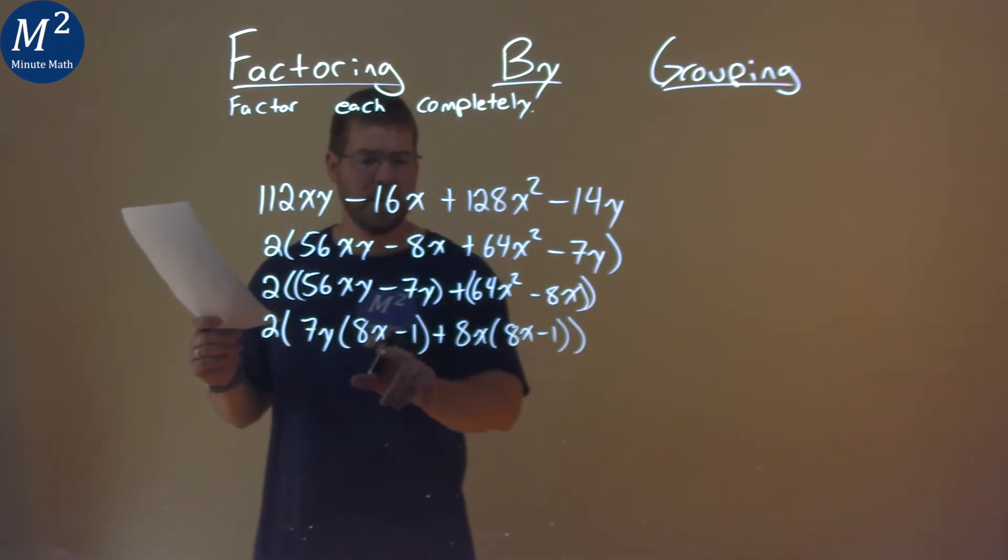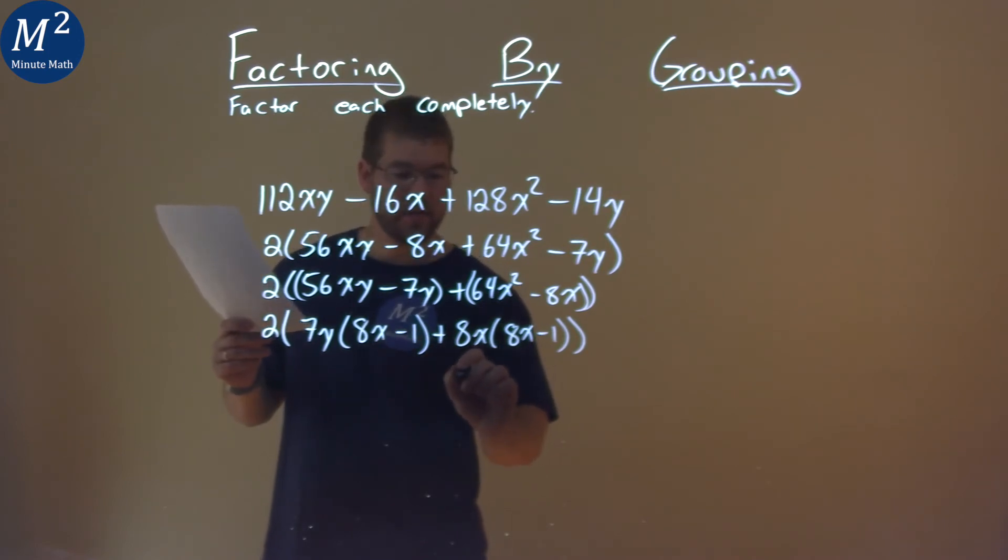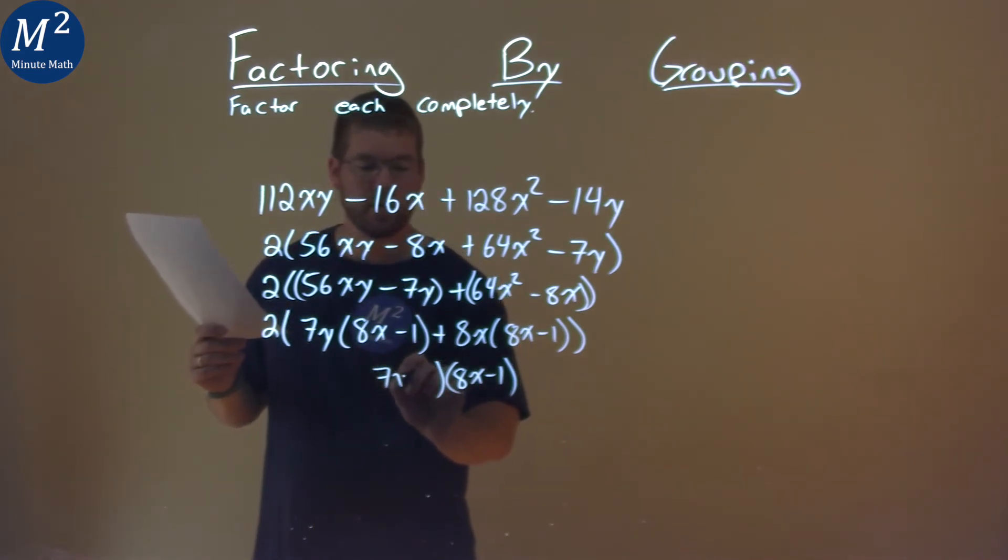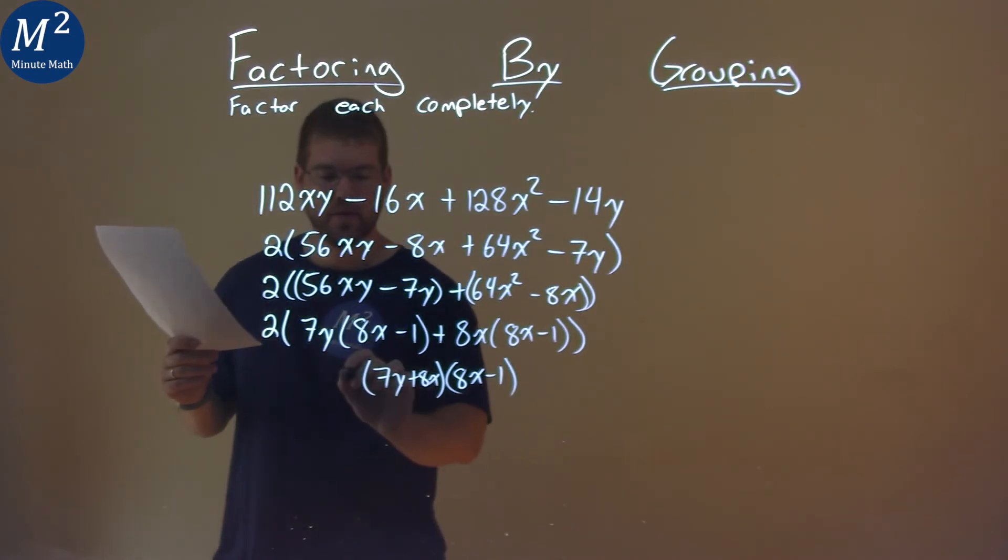Well, that's nice. 8x minus 1 is in both parts. So I pull out an 8x minus 1 here, from both parts, and what I'm left with is 7y plus 8x from here and here, and the 2 comes down.